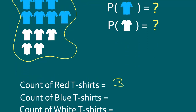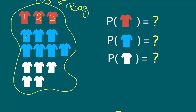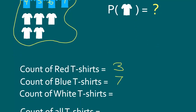How many blue t-shirts do we have? We have one, two, three, four, five, six, seven. We have a total of seven blue t-shirts. And how many white t-shirts do we have? We have one, two, three, four, five. There are a total of five white t-shirts.